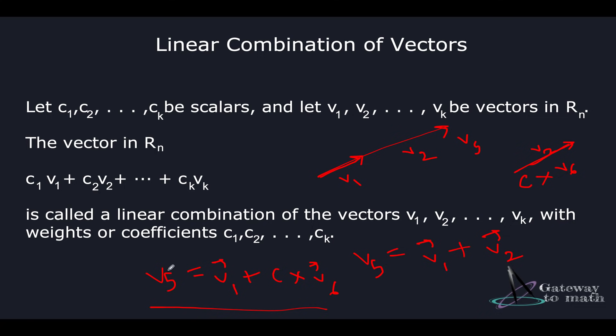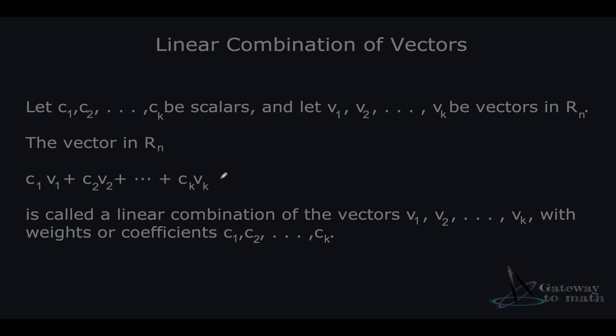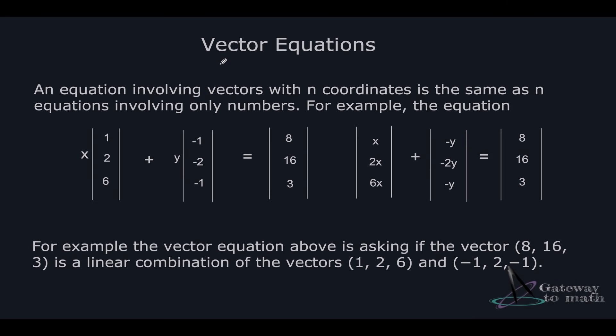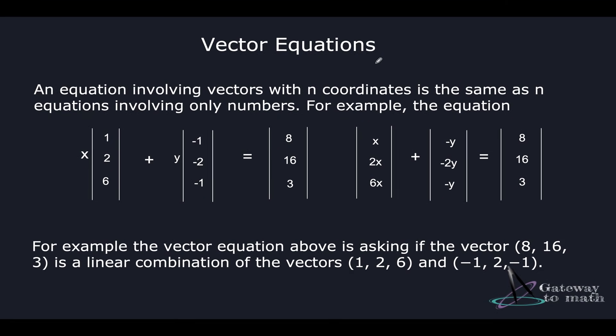You're multiplying a scalar with a vector and then adding the vectors together. This is the linear combination of vectors — you are linearly adding the vectors together to give a final result in the same vector space.